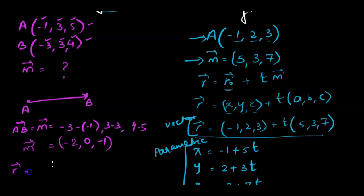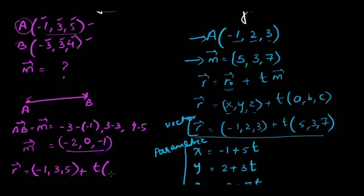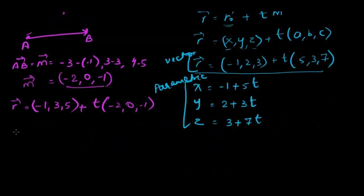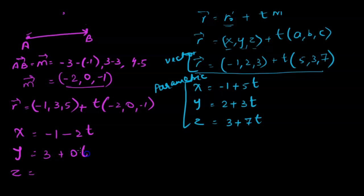To write the vector equation we'll pick point A as R0 since we took A as the start point and direction was found from A to B. So R0 is negative 1, 3, 5 plus T times the direction vector negative 2, 0, negative 1. For the parametric equation, separating x, y and z: x is negative 1 minus 2t, y is 3 plus 0t, and z is 5 minus 1t.